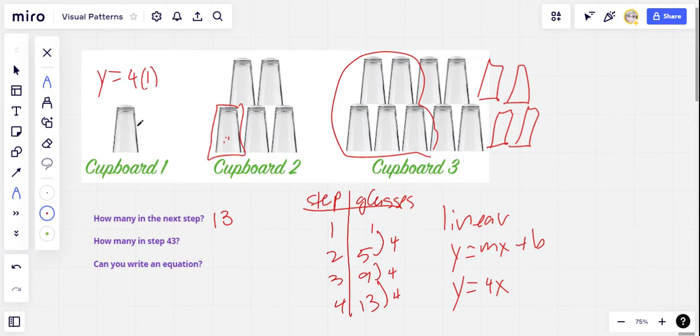So this would give us four here, but we've only got one. We've got three too many glasses. So I'm going to fix that by subtracting three. So four times one minus three would equal one. That's how many glasses we've got here.